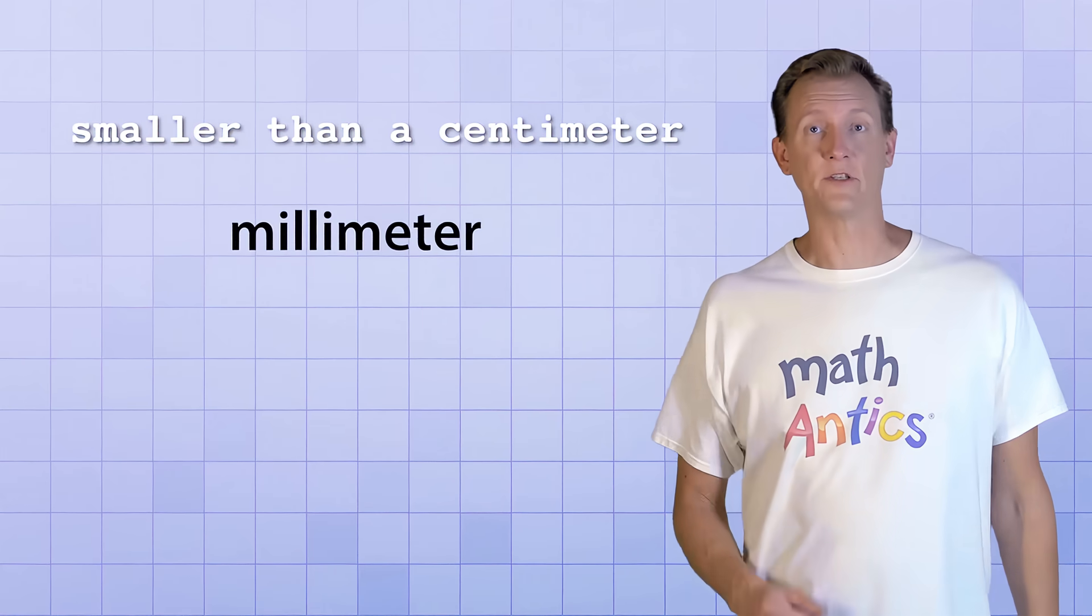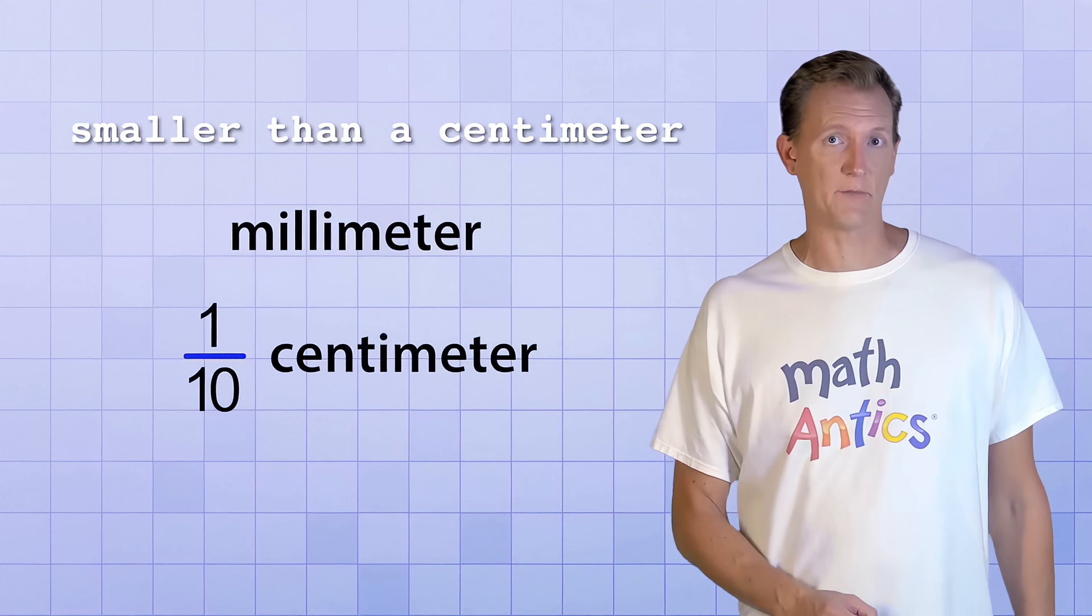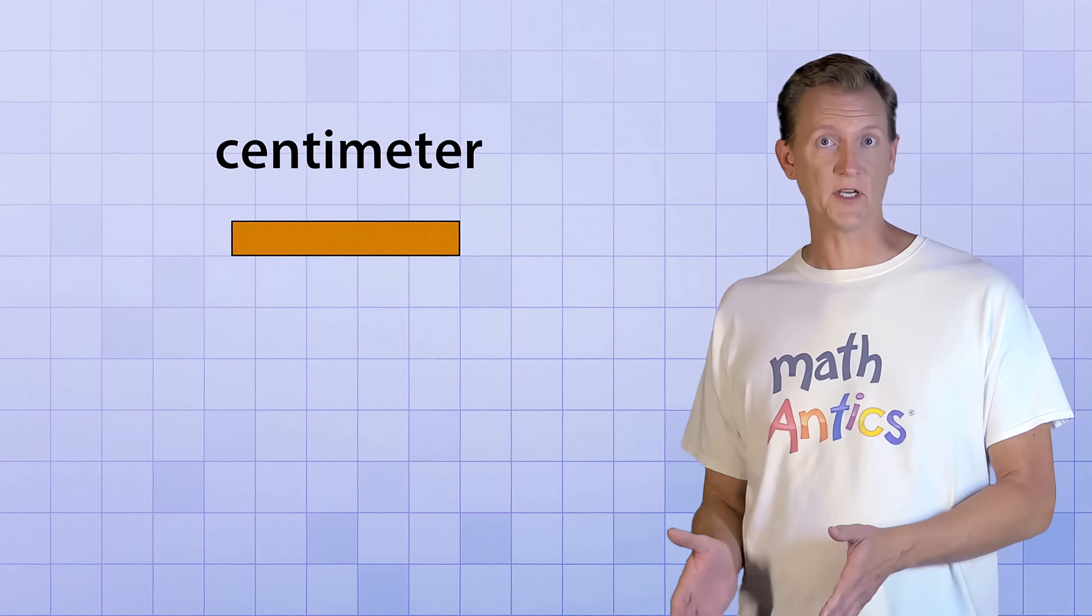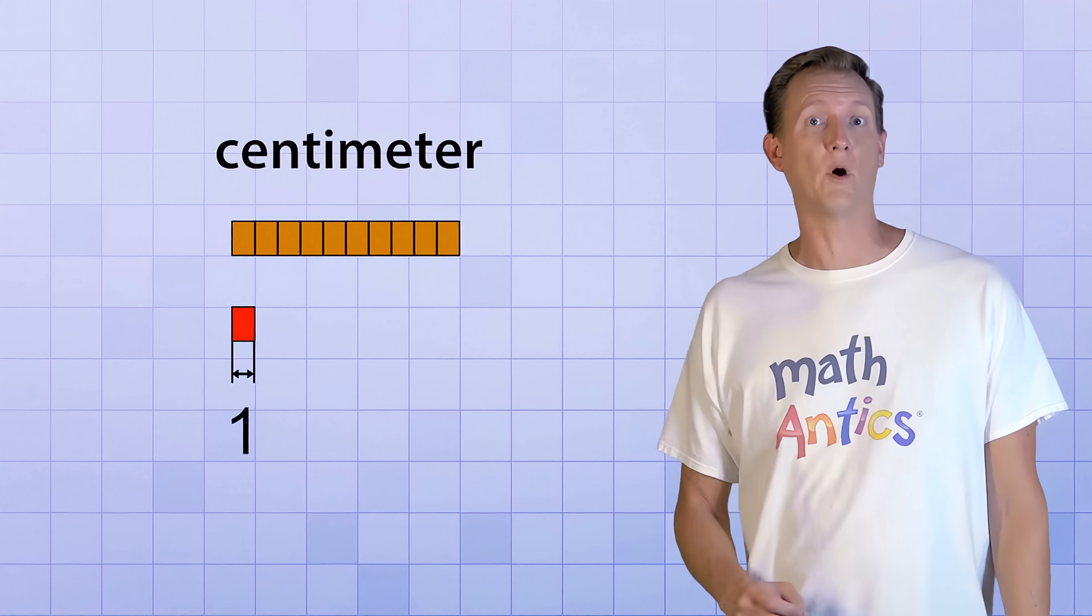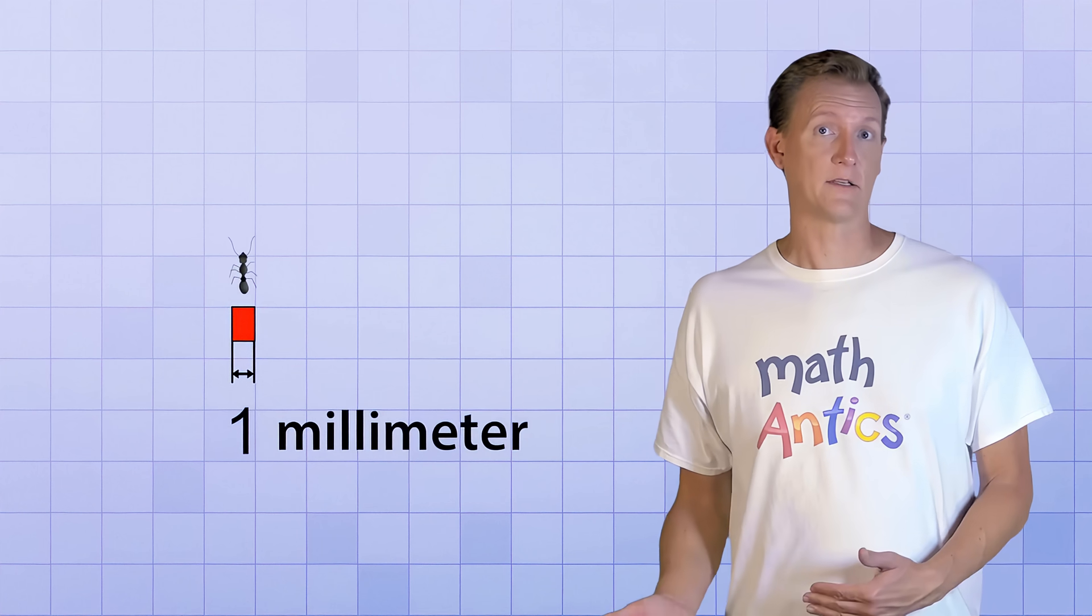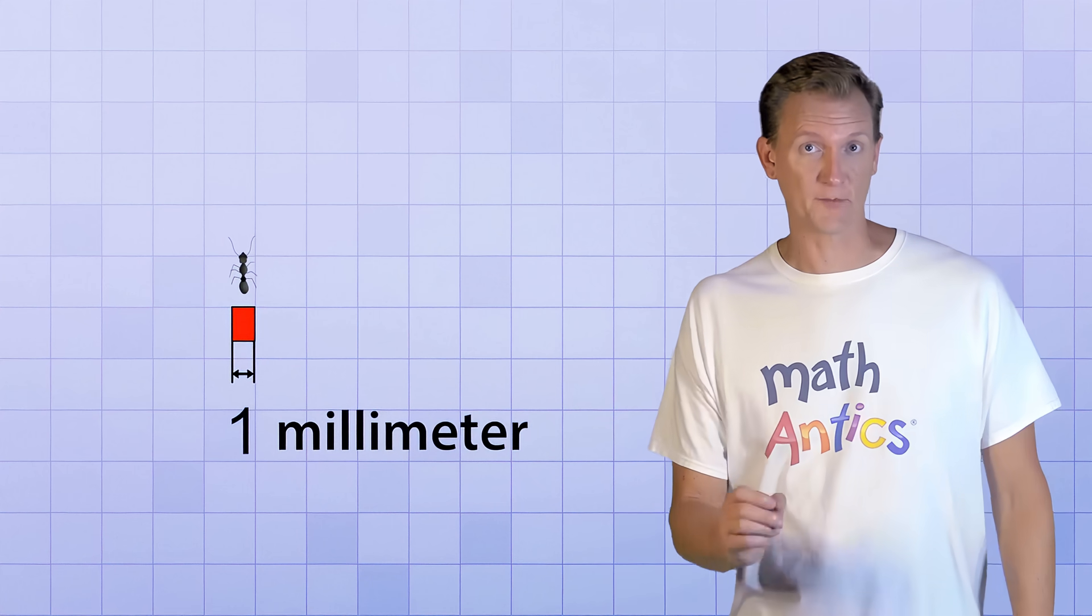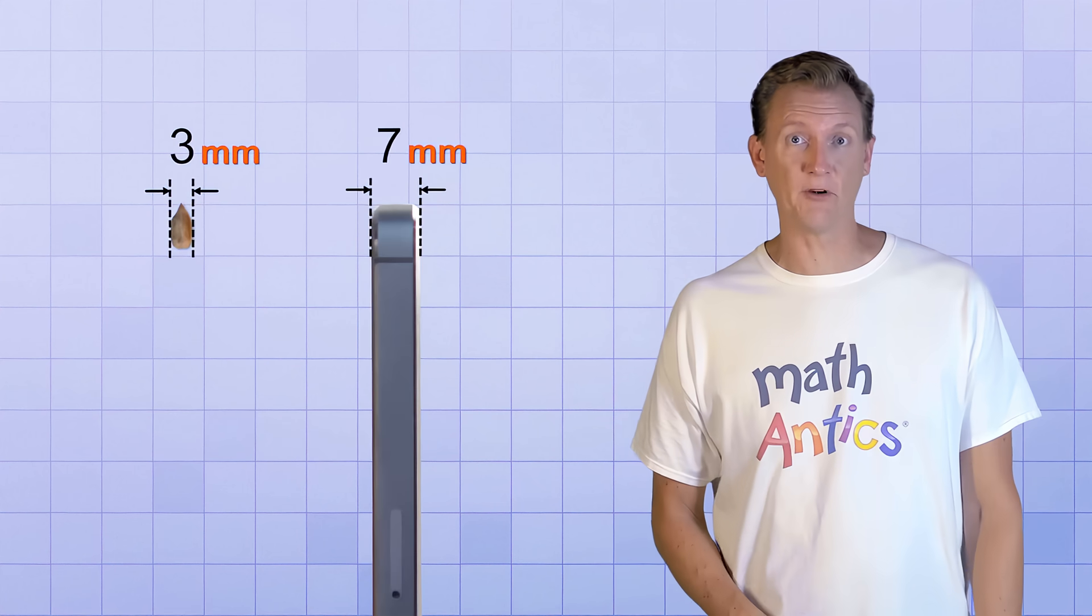Wow... But what if you want to measure things that are smaller than a centimeter? Well, millimeters might be a good choice. A millimeter is exactly 1 tenth of a centimeter. That means if you took a centimeter and divided it up into 10 equal parts, each of those parts would be the distance of 1 millimeter. A millimeter is about the width of a small black ant. So millimeters are good for measuring small things, like the width of a sunflower seed, or the thickness of a smartphone.